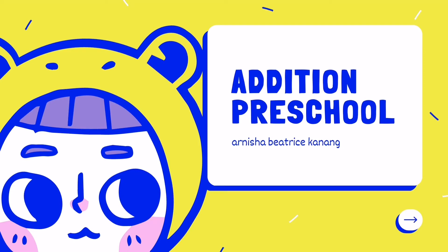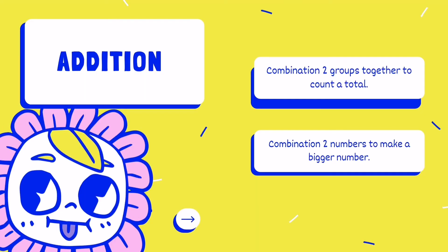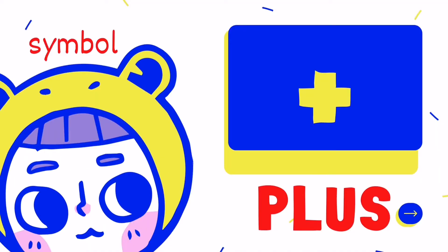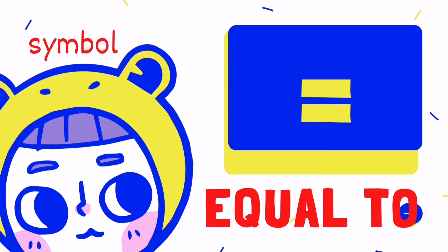Hi, today we will learn about addition. What is addition? Combination — to group together, to count a total. The symbol for this process is plus. Equal to means the result of counting.